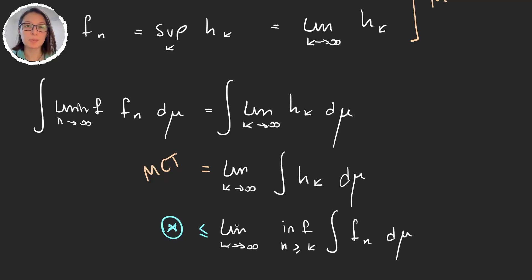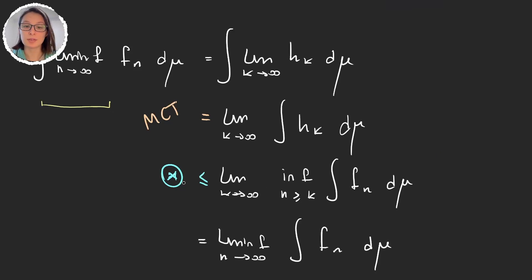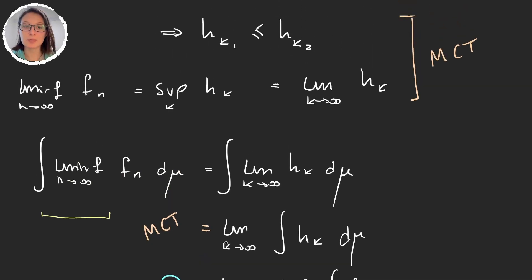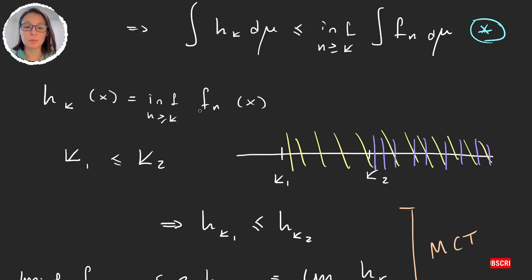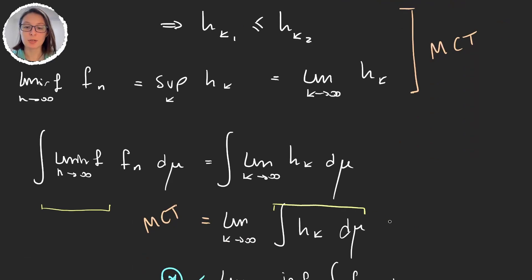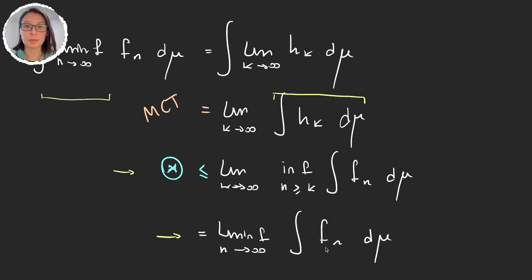So we have the limit as k tends to infinity of the infimum over n greater than k, which is just the inferior limit as n tends to infinity of these integrals. And like this we were able to prove that the integral of the inferior limit is less than or equal to the inferior limit of the integrals. What was useful in this proof was defining the family of functions h_k as the infimum of f_n. We can integrate these functions because each h_k is measurable — we proved in a previous video that the infimum of a sequence of measurable functions is measurable — and so we just used the monotone convergence theorem conveniently to get Fatou's Lemma.